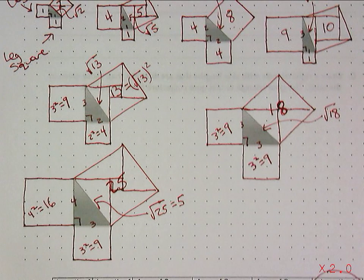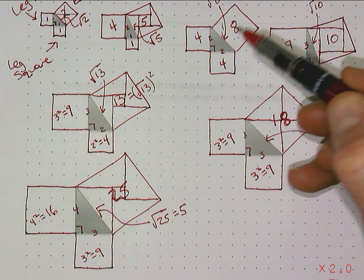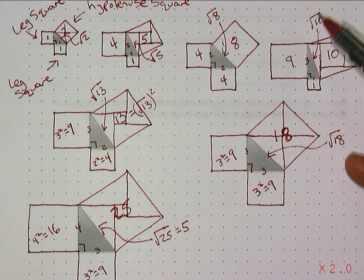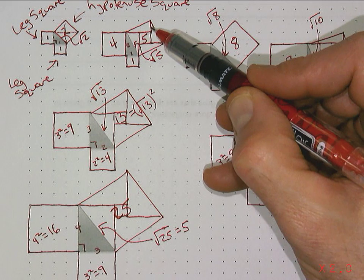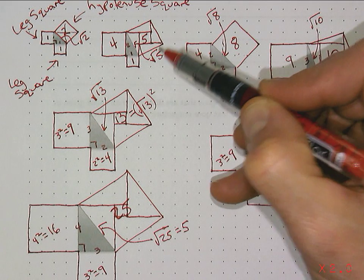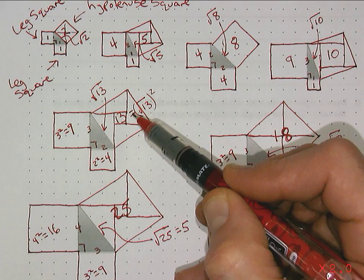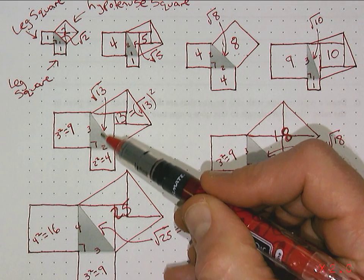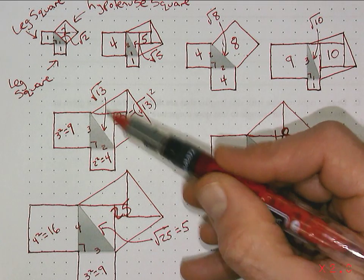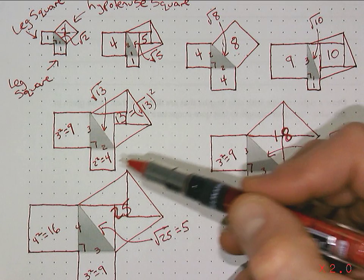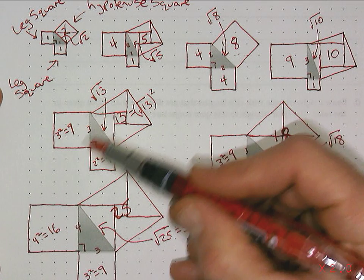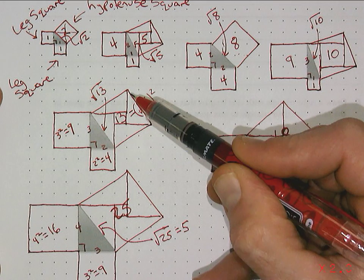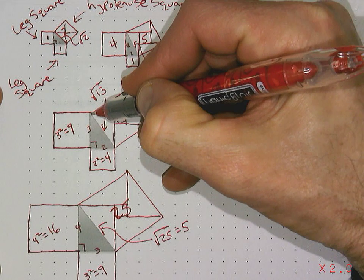Four plus four is eight, so the hypotenuse side length is the square root of eight. Nine plus one is ten, so this is the square root of ten. Four plus one is five, so the hypotenuse is the square root of five. Nine plus four is thirteen, so the hypotenuse length is the square root of thirteen. Everything we're doing in Investigation 3 uses this technique — this idea that Pythagoras came up with — that we take the area of the leg squares and add them together to find the area of the hypotenuse square, and then take the square root to find the hypotenuse length.